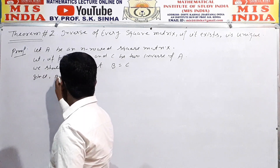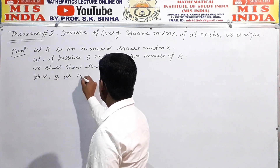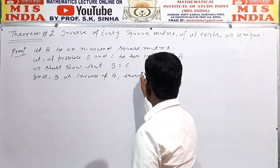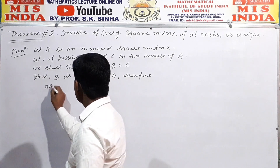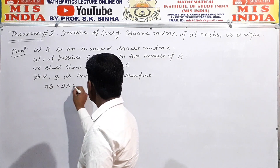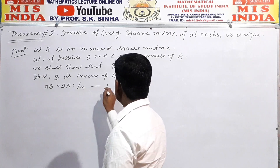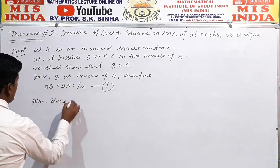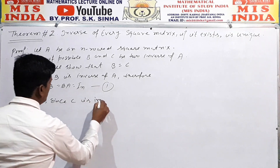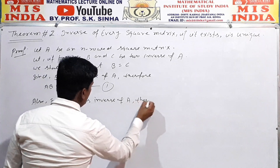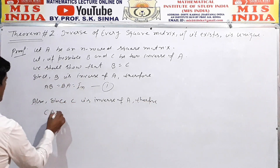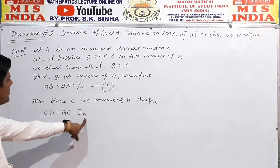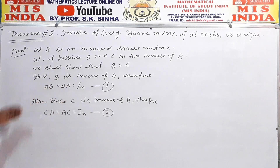Since matrix B is inverse of A, therefore using the formula: AB = BA = I_n. Take this as equation number one. Since C is also inverse of A, therefore: CA = AC = I_n. Take this as equation number two.